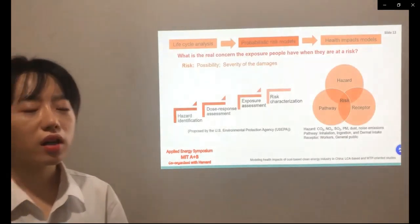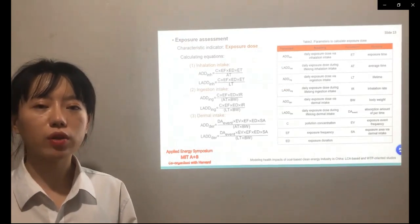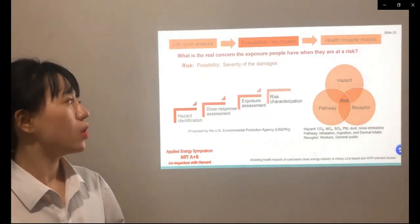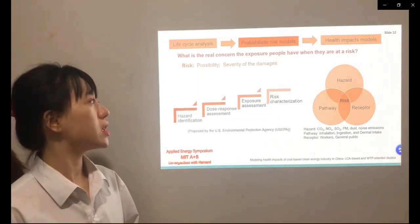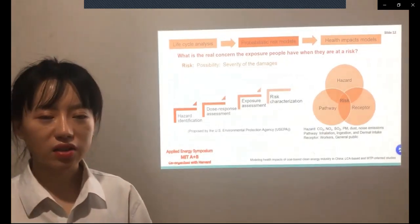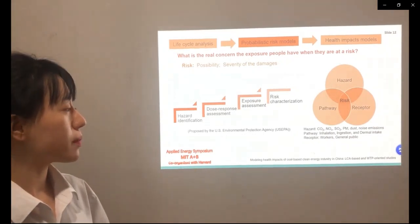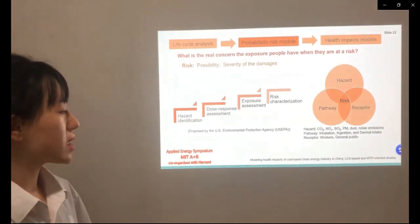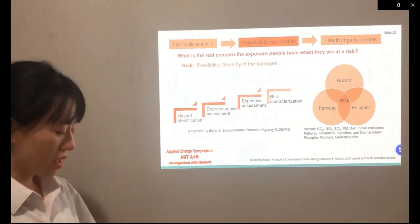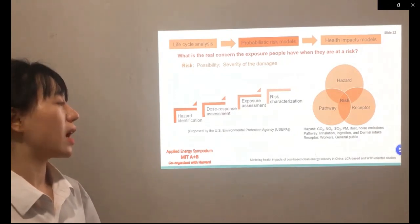Overall, life cycle analysis can help us to investigate the source and concentration of environmental pollution. However, when people are at risk, we usually concern more about the possibility of risk and severity of damages. Hence, health risk models proposed by the U.S. Environmental Protection Agency were applied. It was usually performed with four steps: hazard identification, dose response assessment, exposure assessment, and risk characterization.